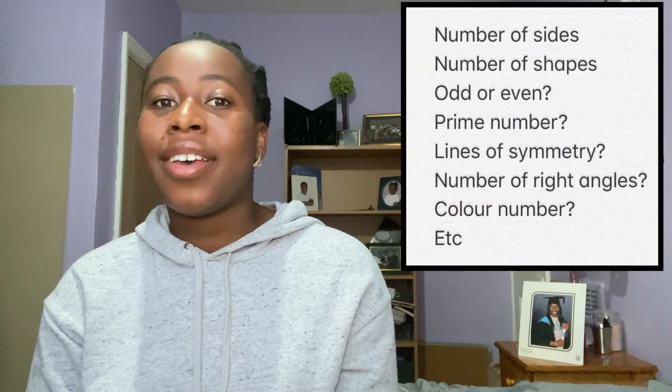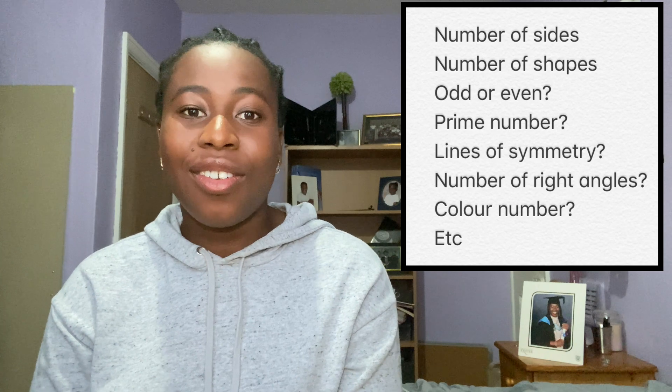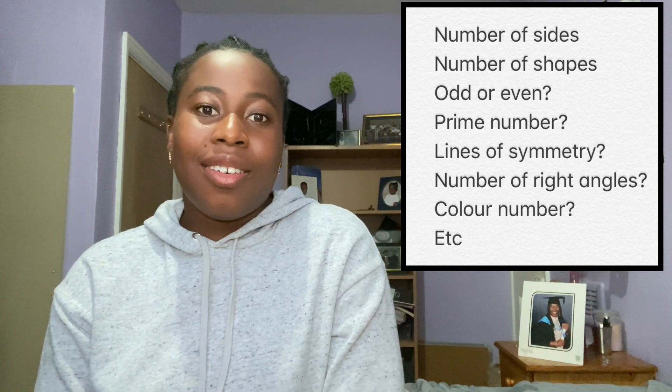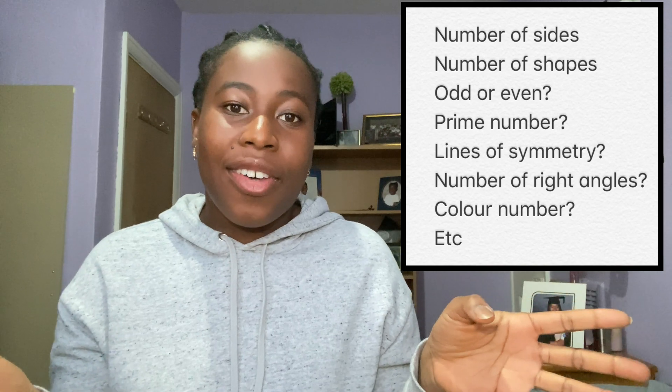N is for number. How many shapes are in one set versus the other? Number of lines of symmetry? Are there an odd or even number of shapes? Are there an odd or even number of sides? Are there a prime number of sides? How many right angles are there? How many curved shapes are there? How many shapes are black or white? It gets as deep as that — literally, how many things can you number? You just train your eye to see those things.